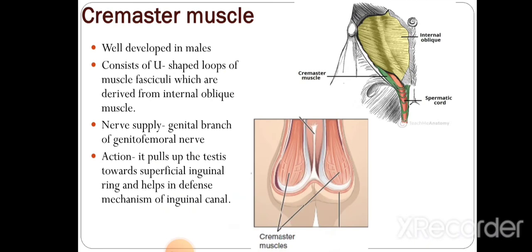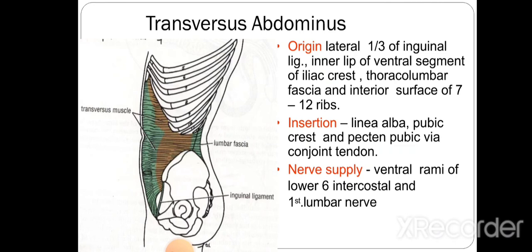The cremaster muscle is well developed in males. It consists of U-shaped loops of internal oblique muscle and is supplied by the genital branch of the genitofemoral nerve. Its function is to pull the testes upwards, which is important for closure of the superficial inguinal ring.